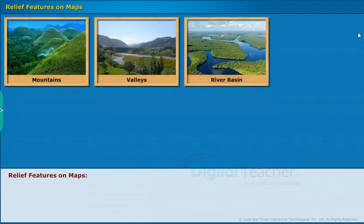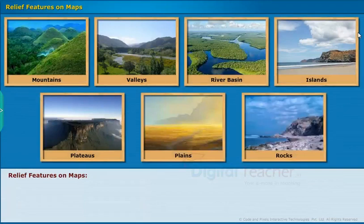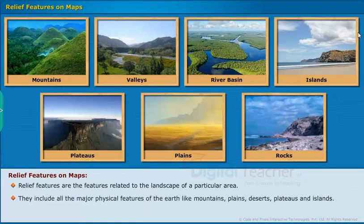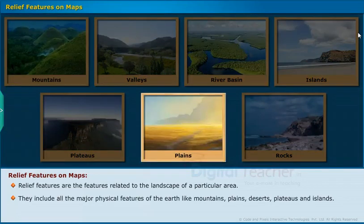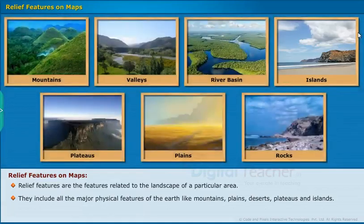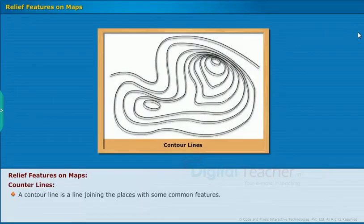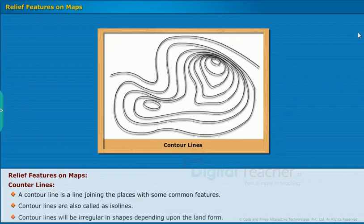Let us now see how relief features are represented on a map. Relief features are features related to the landscape of a particular area. They include all the major physical features of the earth like mountains, plains, deserts, plateaus, and islands. As heights of places cannot be represented on a flat map, a special symbol called a contour line is used. A contour line is a line joining the places with some common features. Contour lines are also called iso lines. Contour lines will be irregular in shape depending upon the landform.